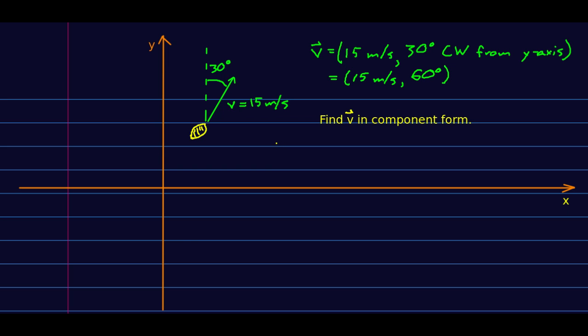Now let's go the other way. Let's start with a vector that's in magnitude direction form and let's get it in component form. So let's say there's a football here. Actually the way I've drawn it, it looks more like a lemon. So let's go with that. Someone's throwing lemons.